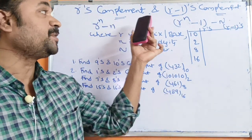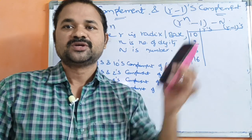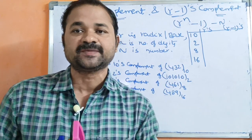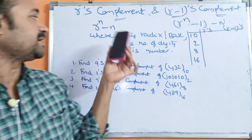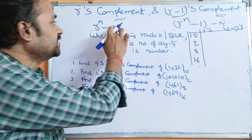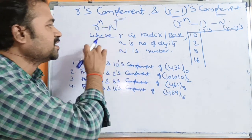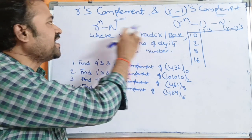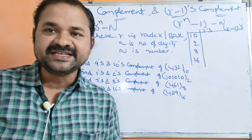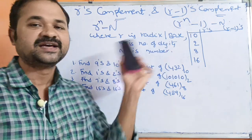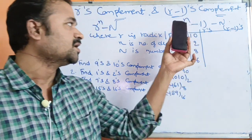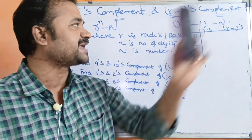Let us discuss R's complement and R-1's complement. Complements are mainly useful in order to do the subtraction operation. The formula for R's complement is R^n minus N, where R is the radix or base value, small n specifies the number of digits, and capital N specifies the given number. For R-1's complement, the formula is R^n minus 1 minus N.